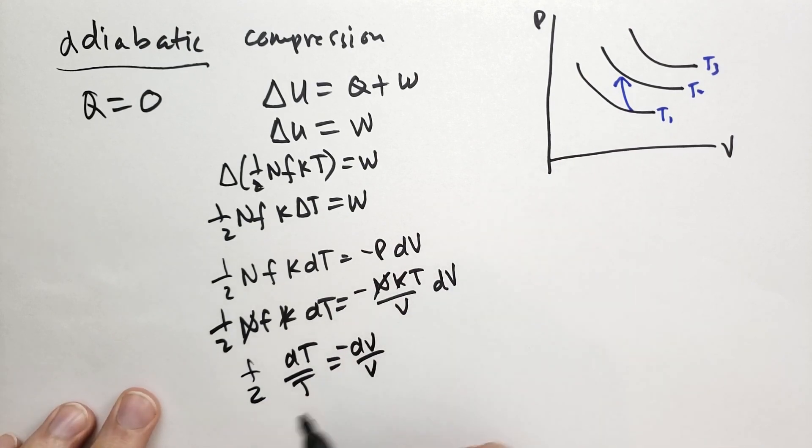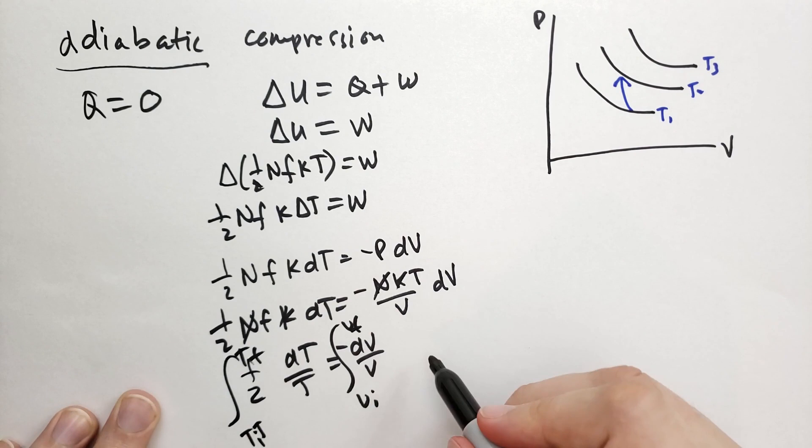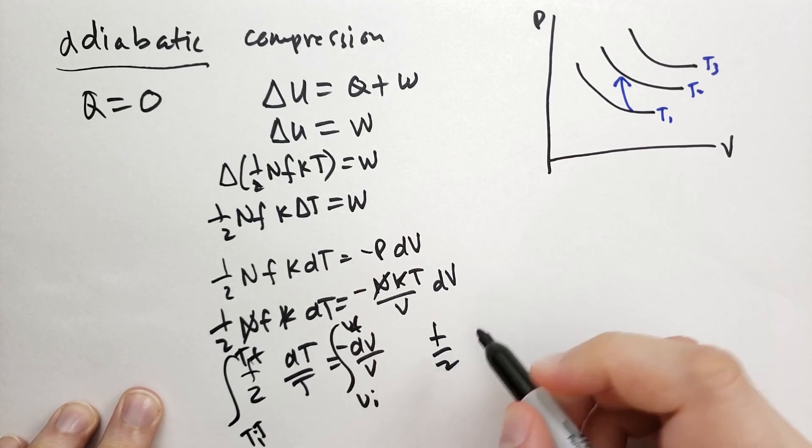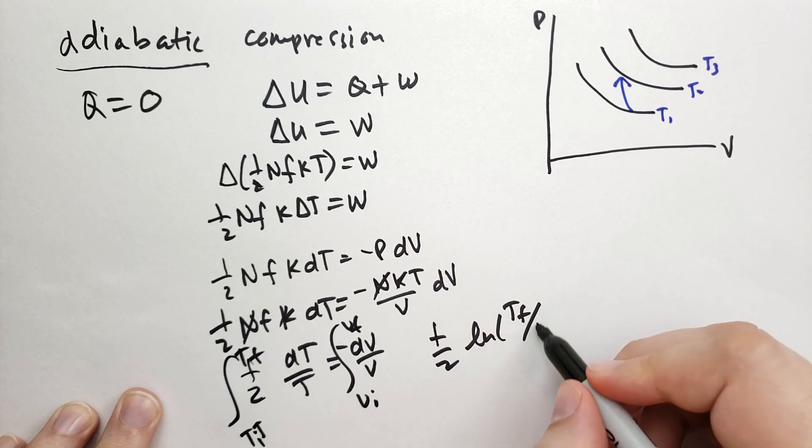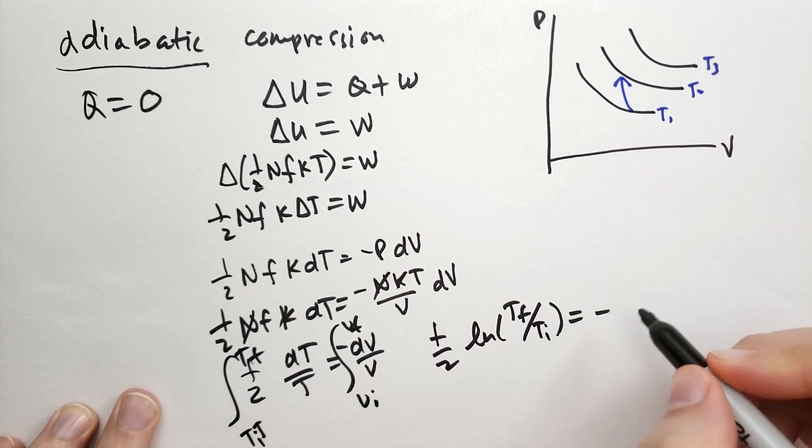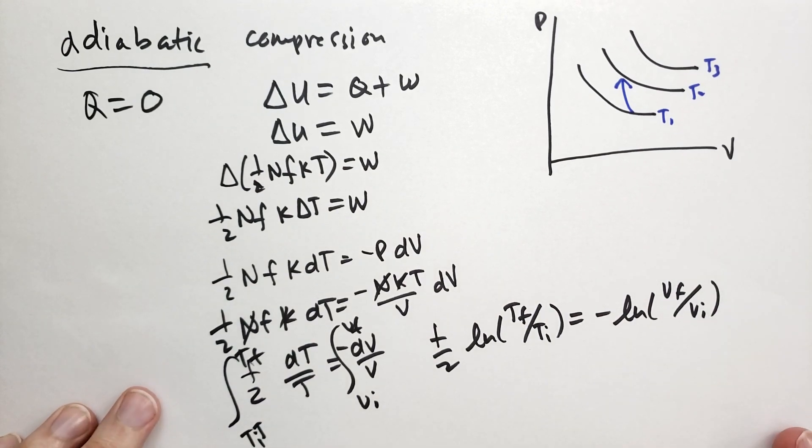And so we get f over 2 dT over T is equal to minus dV over V. And if we take the integral of both sides from T initial to T final, and the integral from V initial to V final, then we're going to get that f over 2 log of the final temperature over the initial temperature is equal to minus log of the final volume divided by the initial volume.